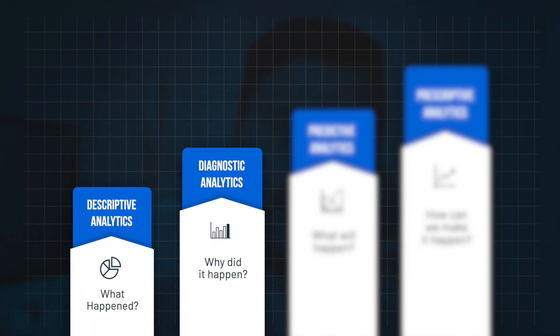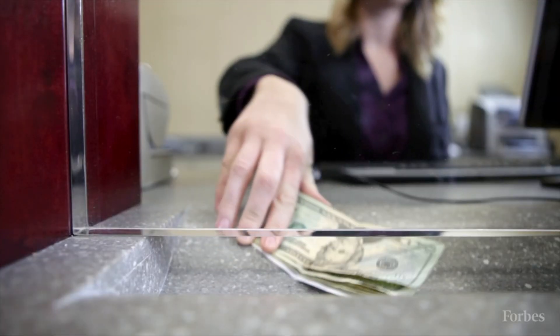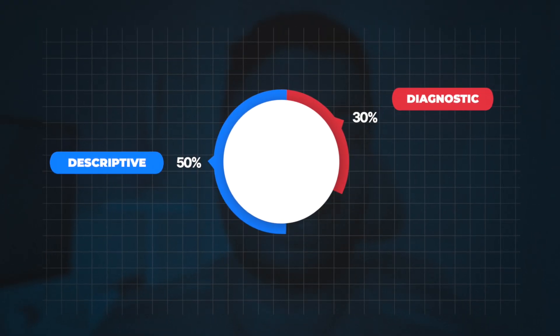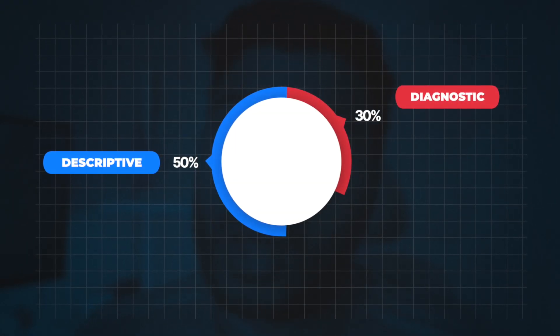The second type of data analytics is diagnostic analytics, and the real question here is: why did it happen? Your managers may ask: why did the customer go overdrawn? Why did the customer fail to make a payment? Why did the customer not consider this product or that product? These are all diagnostic questions, very relevant in a bank, and that forms another 30% of analytics. Combined with descriptive analytics, you've got 80% of all analytics centered around the what and the why.